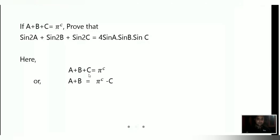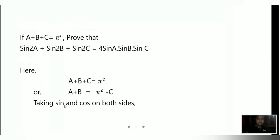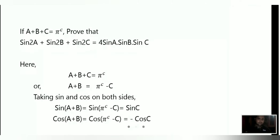We take C to the other side, so A plus B equals pi minus C. Now we take sine on both sides: sine of A plus B equals sine of 180 degrees minus C, which equals sinC, since pi radian equals 180 degrees and sin(180° - C) = sinC.